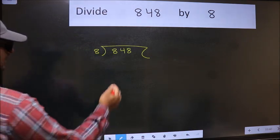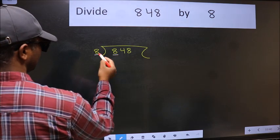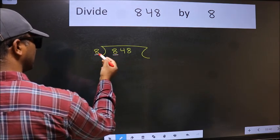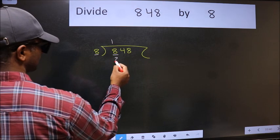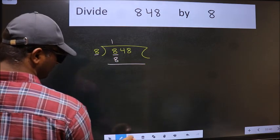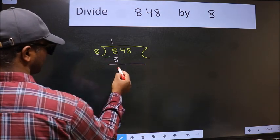Next, here we have 8 and here 8. When do we get 8 in the 8 table? 8 ones is 8. Now we should subtract. We get 0.